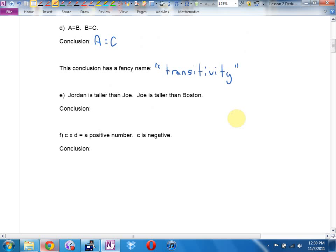E, Jordan is taller than Joe. Joe is taller than Boston. Conclusion. Should we model it just to find out? Can you use the names that were given there instead of saying Boston is the smallest? Because I don't know if that's the... I would say that Boston is shorter than.